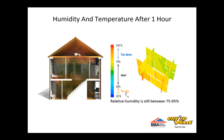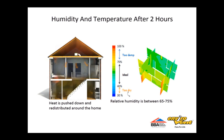Looking at the scale, the CFD model shows that after only one hour, the humidity within the dwelling is showing yellow, which means the humidity has fallen to around 80%. After two hours, the air has already fallen below 70% and the heat at high level has been totally redistributed around the property, saving energy.